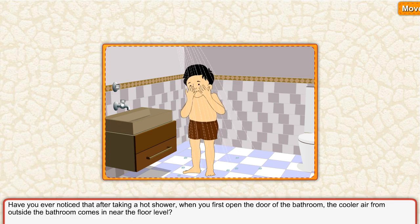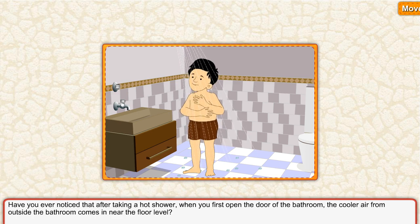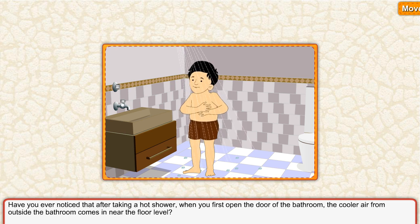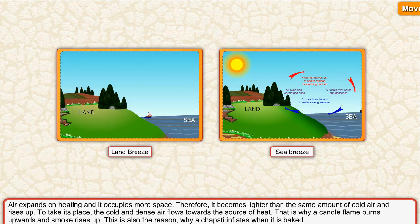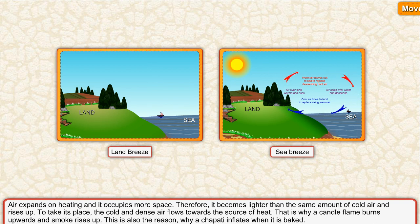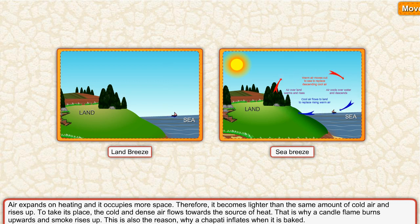Movement of Air. Have you ever noticed that after taking a hot shower, when you first open the door of the bathroom, the cooler air from outside comes in near the floor level? Air expands on heating and occupies more space. Therefore, it becomes lighter than the same amount of cold air and rises up. To take its place, the cold and dense air flows towards the source of heat.